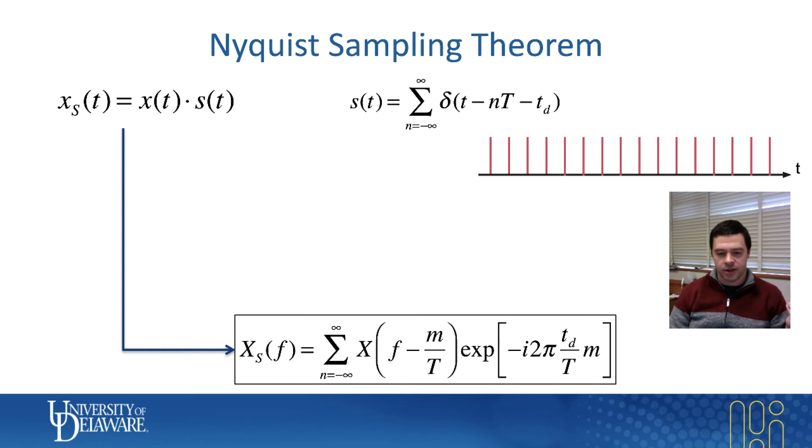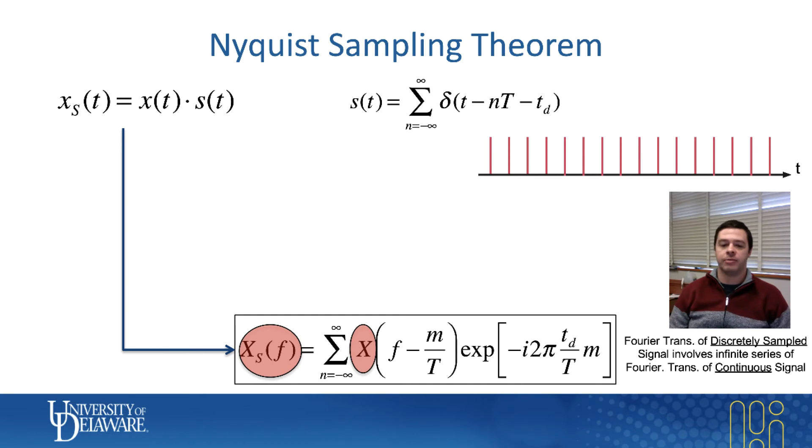So what's inside that infinite series turns out to be the Fourier transform of the temperature on the surface or of the continuous thing that we're trying to sense, but at frequencies, but at weird frequencies. You'll see that the infinite series actually covers all the different frequencies, and then times some weird phase factor that has to do with the time delay.